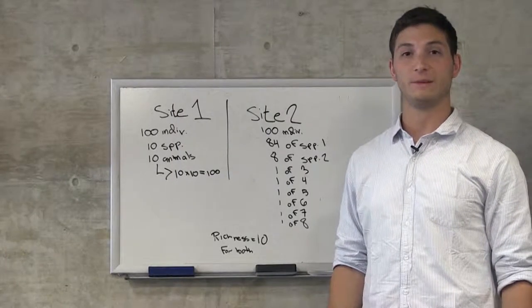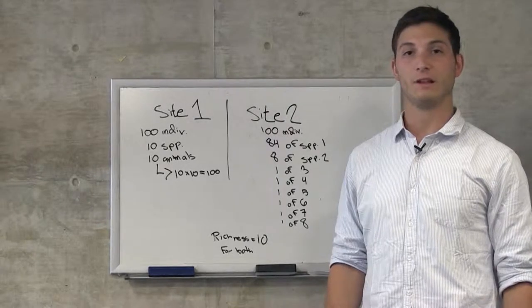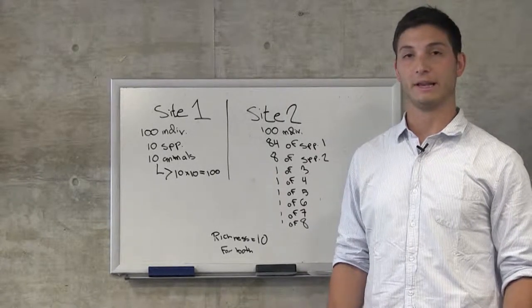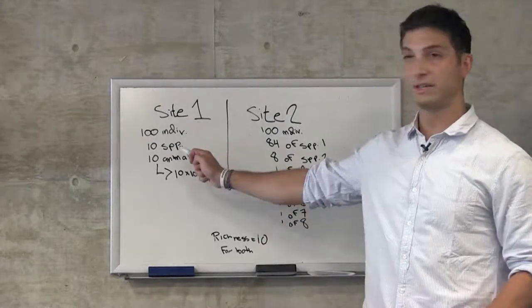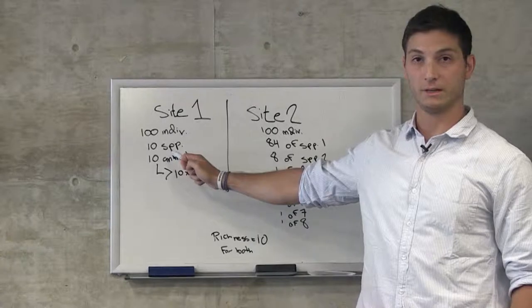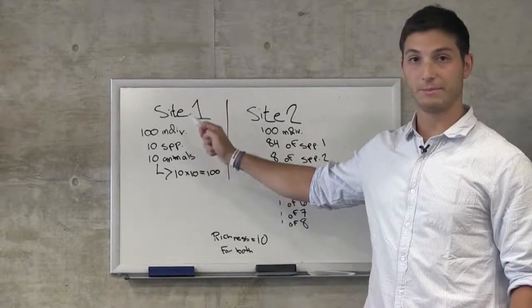The second tricky thing to consider is species evenness. This has to do with the relative proportions within each species that we encounter in an area. So think of this example. We have 100 individuals. We find that there are 10 species within, and 10 animals within each species.